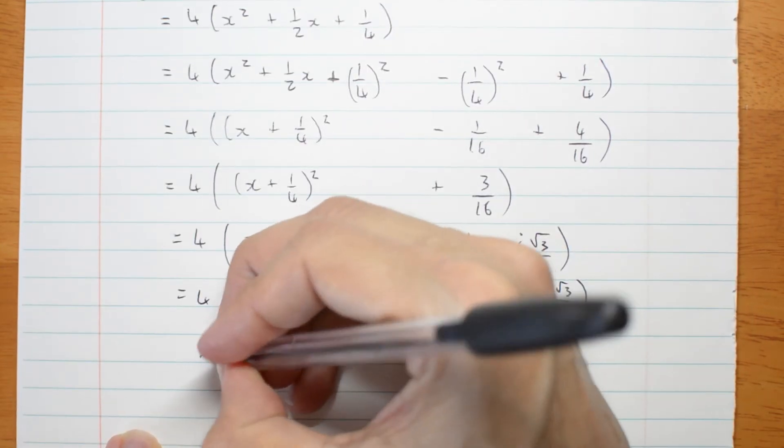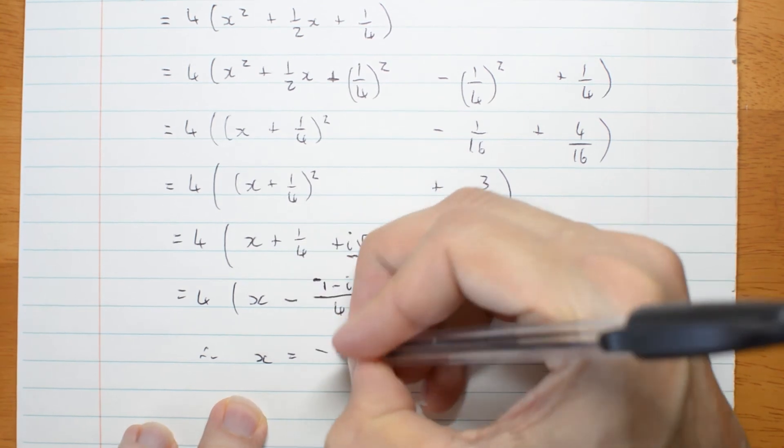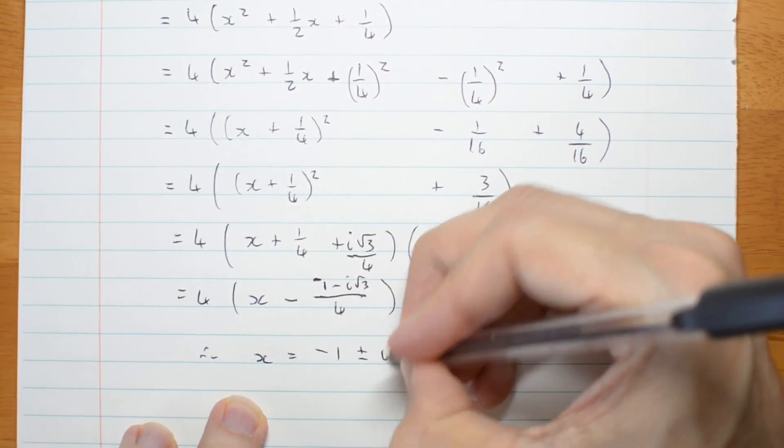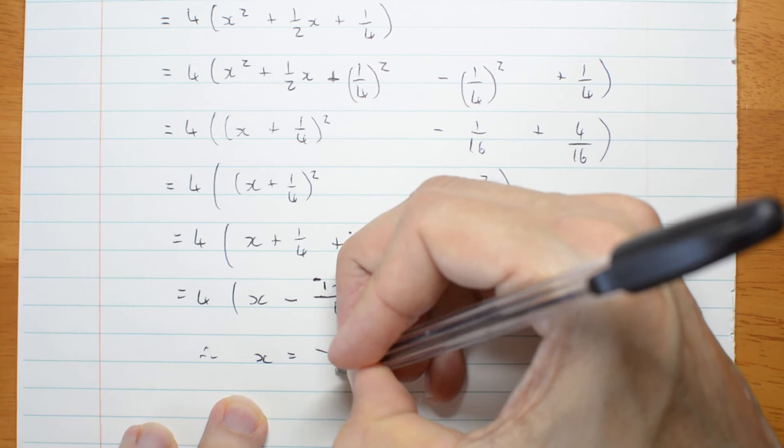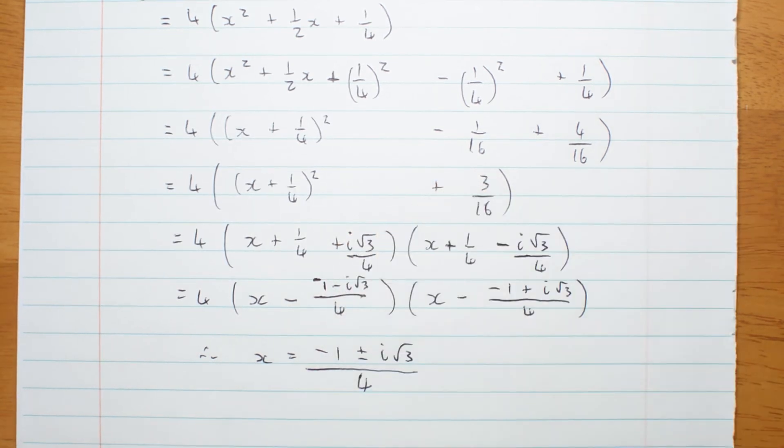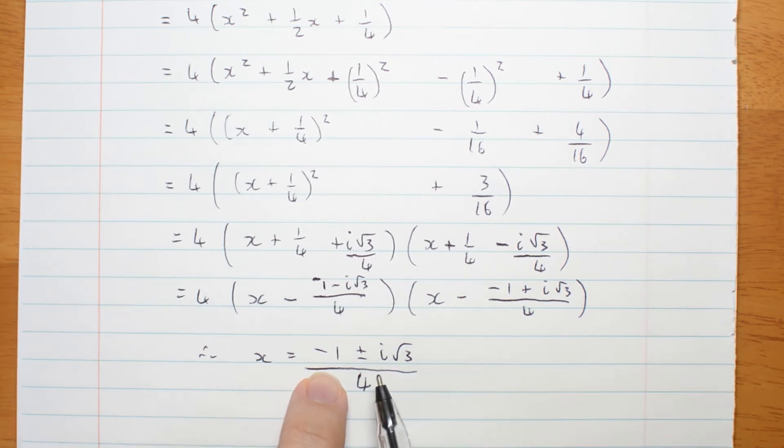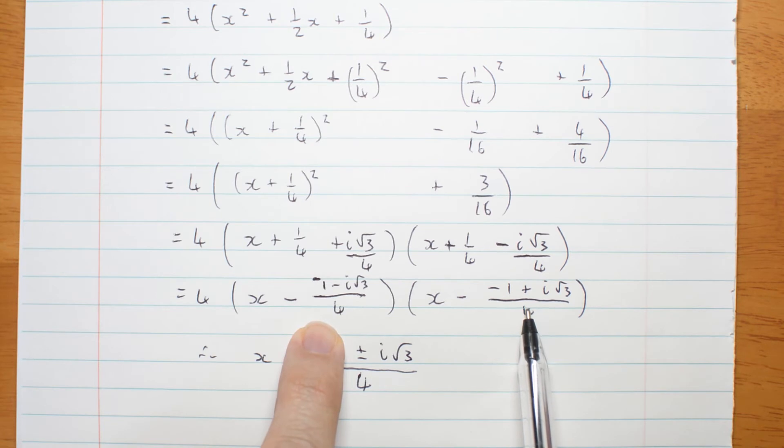Therefore, x equals negative 1 plus or minus i root 3 all over 4. Be very careful that you write your negative sign in the right place over the whole fraction. You don't want the negative out the front. That would be a different solution. Because we know these are always going to be complex conjugates, you can write it with a plus or minus.